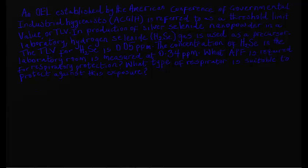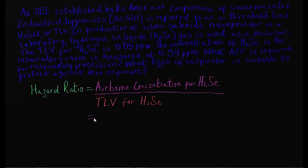The concentration of hydrogen selenide in the laboratory room is measured at 0.34 parts per million. What APF is required for respiratory protection? What type of respirator is suitable to protect against this exposure? Similarly, in this scenario, learners should divide the concentration for hydrogen selenide gas in the room by the given TLV for hydrogen selenide.